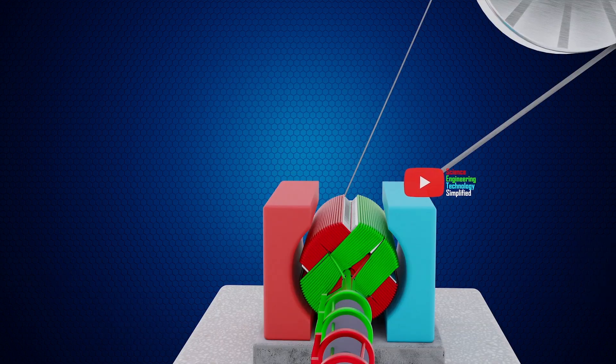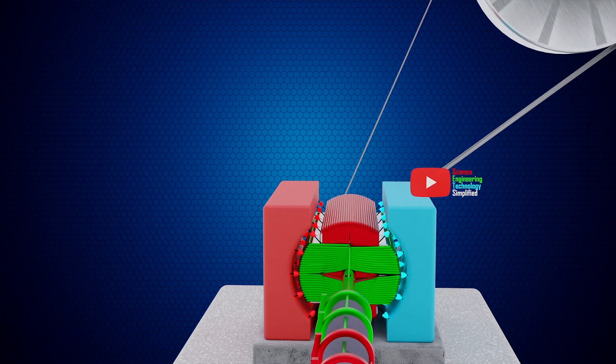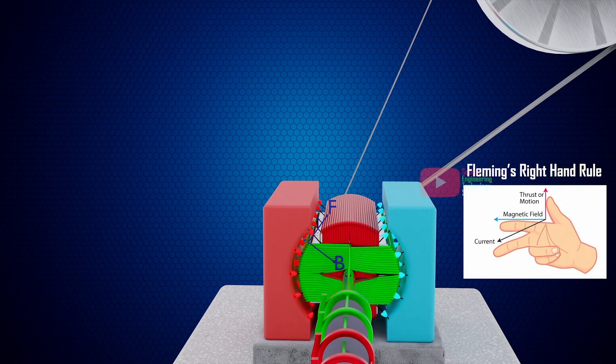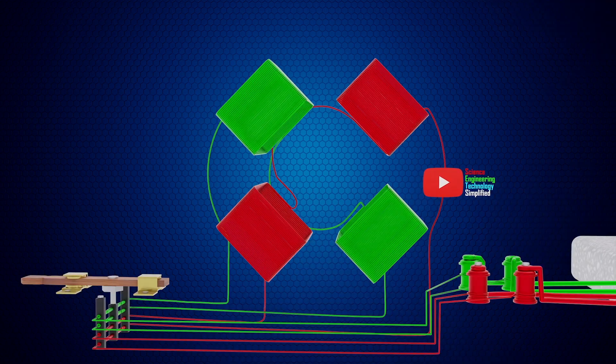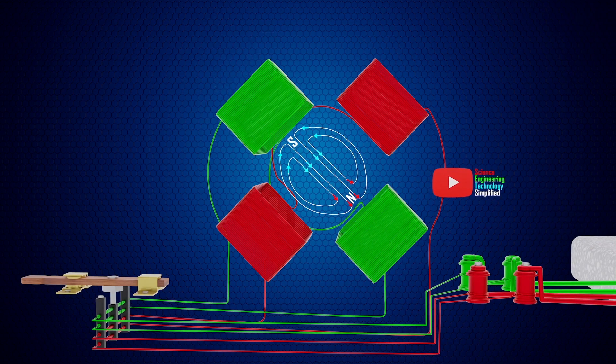If the generator coils rotate by 90 degrees, only the green coil cuts the magnetic field. Therefore, the current will be induced only in the green coil of the generator, generating two magnetic fields in the green coils of the field magnets of the motor. The resultant of these two magnetic fields will be in this direction.